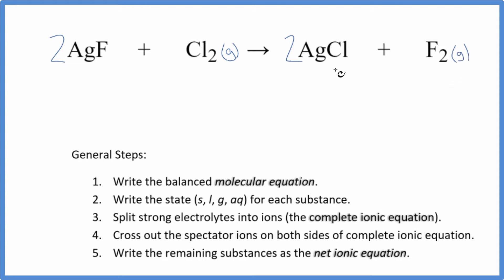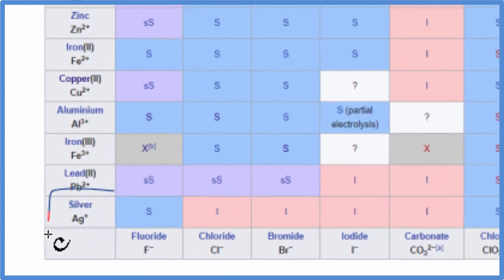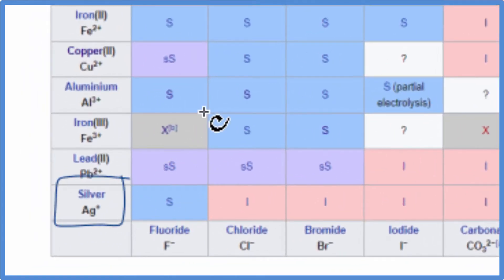For AgF and AgCl, silver compounds are often insoluble. So I want to check this on a solubility table. So I come down here. This is silver right here. We'll look at AgF first. Here's the fluoride ion. So we go up and over and that S, that means AgF is soluble. It's gonna dissolve in water and dissociate into its ions.